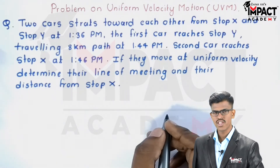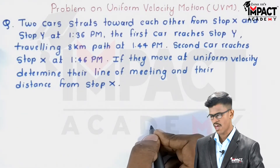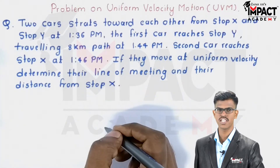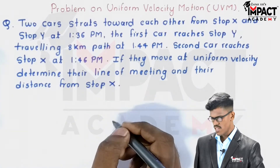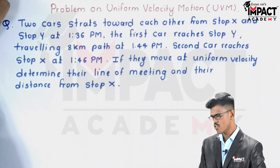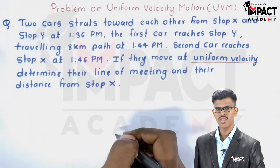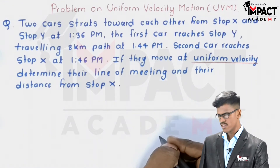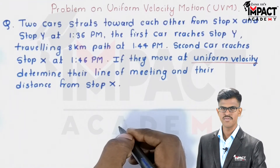While solving a rectilinear problem, we have to decide which type of rectilinear motion it is. In this question, they mention uniform velocity motion, so this is a uniform velocity motion problem.